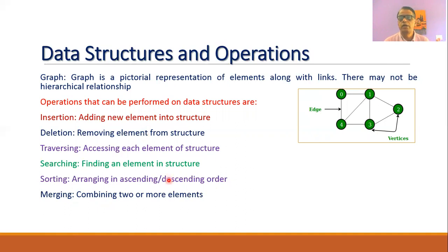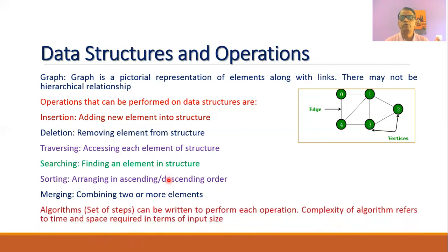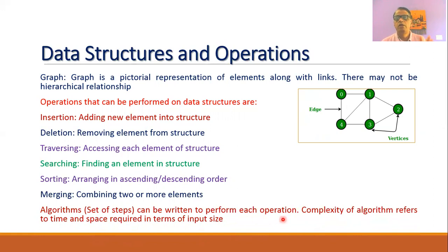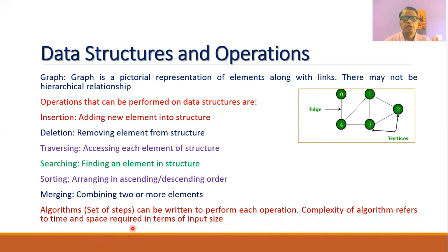Whenever you want to perform any operation on a data structure, you need to write an algorithm. An algorithm is a set of steps written to perform an operation. Every algorithm is associated with complexity — which refers to the time and space requirements needed to execute it, expressed in terms of input size. Algorithms with minimum time and space requirements should be selected to achieve less complexity.